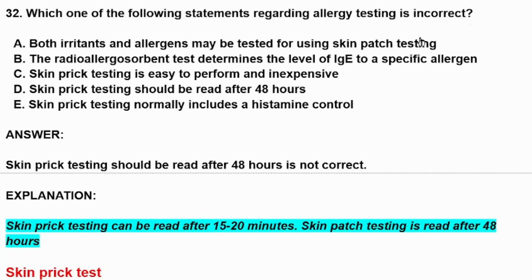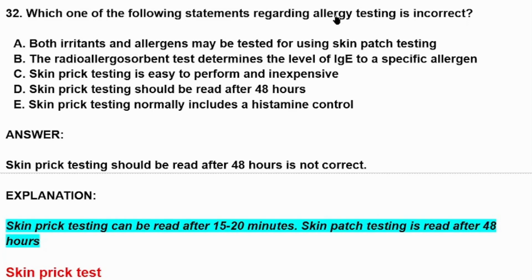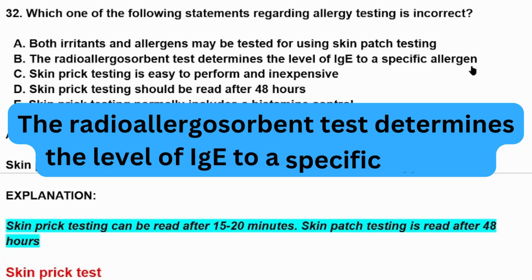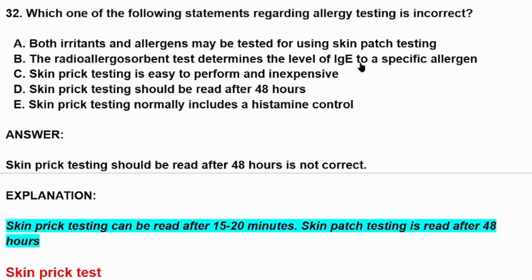Option A: both irritants and allergens may be tested using skin patch testing — this is correct. Option B: the radioallergosorbent test determines the level of immunoglobulin E to a specific allergen — this is also correct.